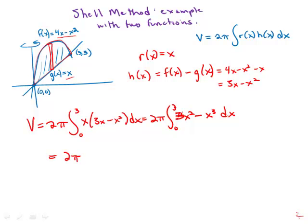Now, of course, integrating the antiderivative of 3x squared is x cubed. The antiderivative of x cubed is x to the fourth over 4.